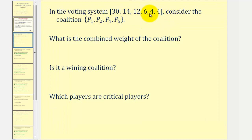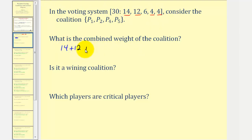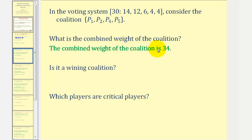Here we have a weighted voting system. We want to consider the coalition that consists of player one, player two, player four, and player five. The combined weight of the coalition is fourteen plus twelve plus four plus four, which equals thirty-four. Since thirty-four is greater than or equal to the quota of thirty, we do have a winning coalition.